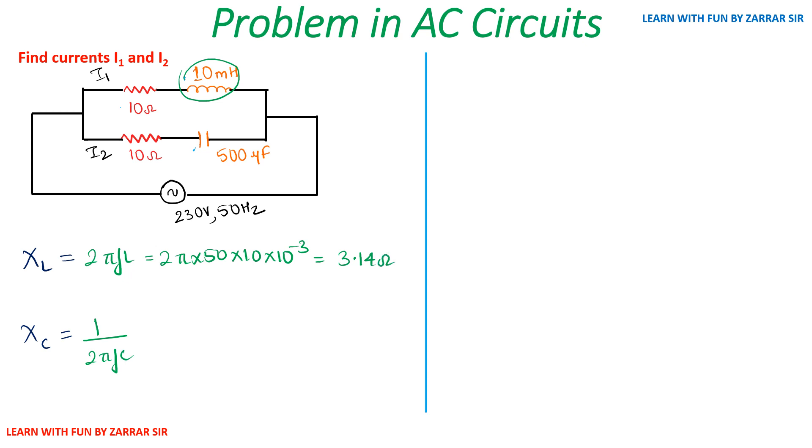Similarly, it's basic mathematics: 2πf, f is 50, C is 500 microfarads, so I'll write 500 × 10^-6. This value will turn out to be 6.366 ohms. I won't waste your time, so I've already calculated for you. This is my XL and this is my XC—inductive reactance and capacitive reactance.